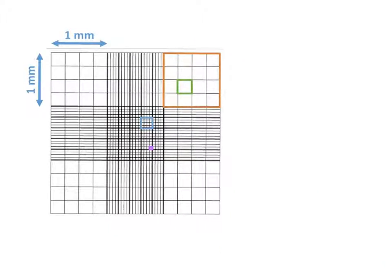If we now do the same for the green square, we can see that the length of the sides is going to be 0.25 millimeters, because there's four of them within that one millimeter square. Therefore, our area is going to be 0.25 times 0.25, so that's going to give us an area of 0.0625 millimeters squared.